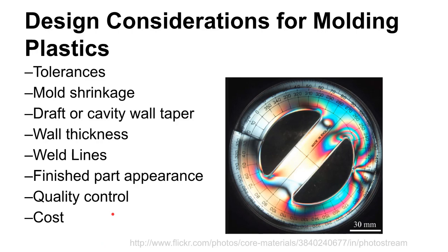Some more design considerations: tolerances — the tolerance of your part is going to dictate a lot that goes into your die. How much are you going to have to compensate for shrinkage, and how precisely will you need to do that? Are the parts going to need to fit together with other parts? Mold shrinkage — you should already be aware from Processes 2 that when plastics are molded they will tend to shrink, so molds are made oversized. The way you compensate in design is to take the model of the finished part, scale it up in your CAD system, and then design your mold around that scaled-up part.